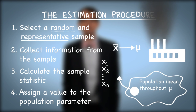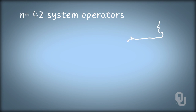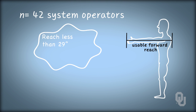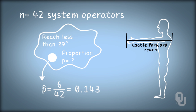Our estimate of the mean height of all students would be the sample mean of our representative sample of students. Another brief example to illustrate these four steps could involve designing a system around the characteristics of operators expected to use the system. Say we collect a random and representative sample of n equals 42 system operators, and then for each member of the sample, we measure their usable forward reach. Our population parameter of interest is the proportion of those operators whose forward reach is fewer than 29 inches — that is, we want to estimate population proportion p. From our sample, we found that six of those 42 operators had a forward reach of fewer than 29 inches. So sample proportion p-hat is 6 divided by 42, or 0.143. Therefore, our estimate of the population proportion p of all system operators whose reach is fewer than 29 inches would be 0.143, or 14.3% of operators.